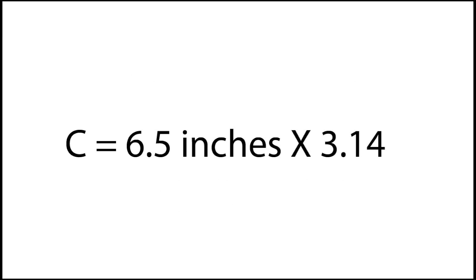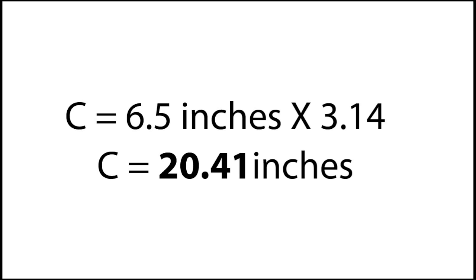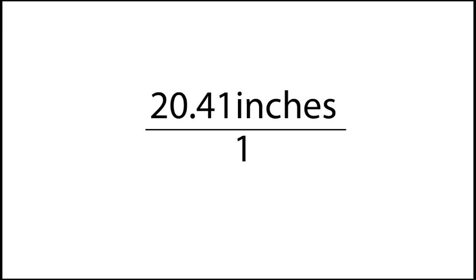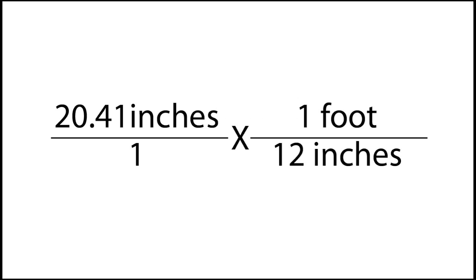So we're going to take 6.5 inches — our diameter — and multiply it times 3.14, which is pi. We arrive at 20.41 inches in circumference. That is the distance around the circle of our anemometer, so every time it makes one full spin it has traveled 20.41 inches. We'll put 20.41 over 1 so we can work with it in fraction form.